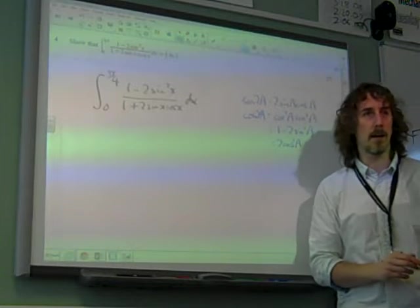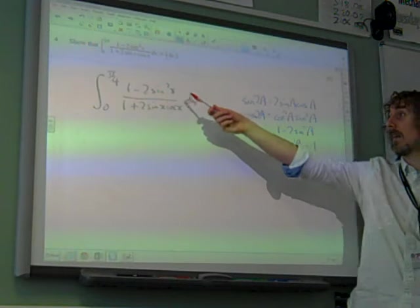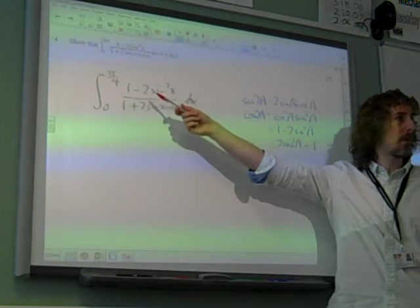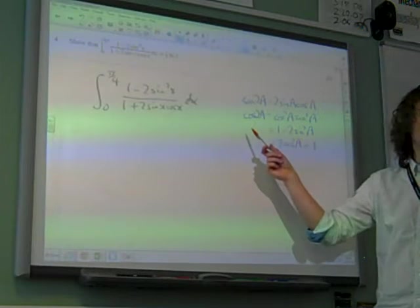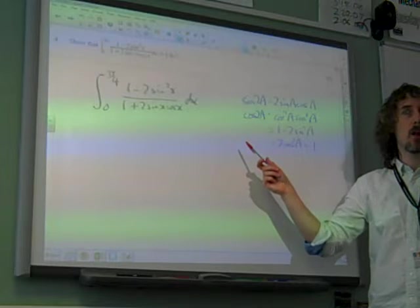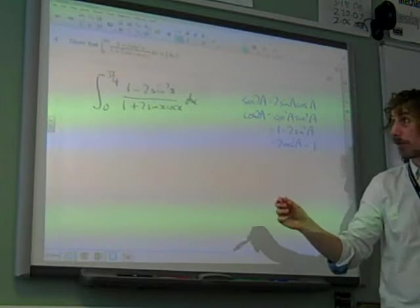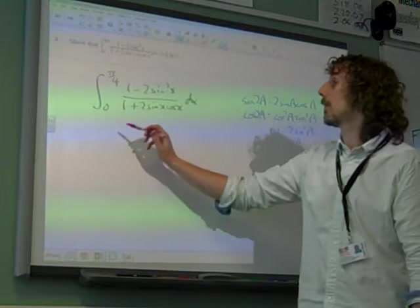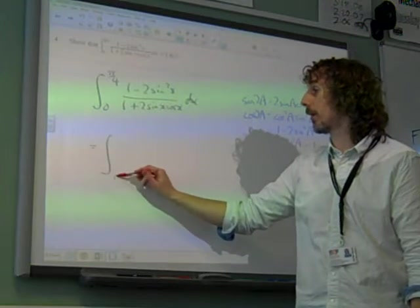But we don't need that form right now. And there it is: 1 minus 2 sin squared x is cos 2x. So they're there for us. We should straight away spot that we've got a couple of identity things going on here.